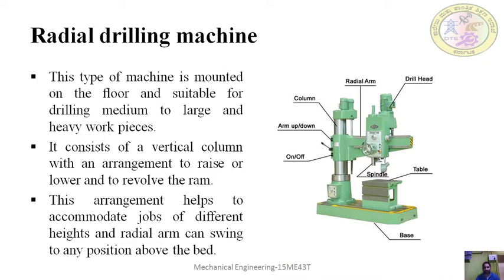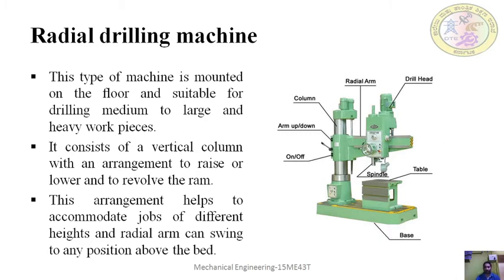Next is the radial drilling machine. As you can see in the figure, it consists of a radial arm — that is why it is called a radial drilling machine. This radial arm can rotate and swing along a particular radius, so you can move it along the radial direction. This type of machine is mounted on the floor and installed at a fixed place. It is suitable for drilling medium to large and heavy workpieces, as it has the ability to cover a wide radial area.